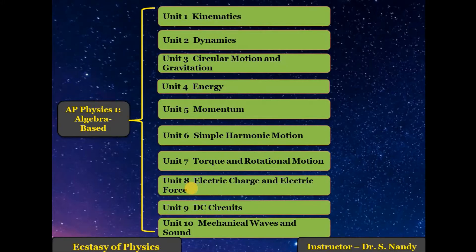AP Physics 1 Algebra based course has 10 different units. Just a few days back, AP College Board updated their website about the AP Physics 1 curriculum. Essentially they have removed units 8, 9, and 10.